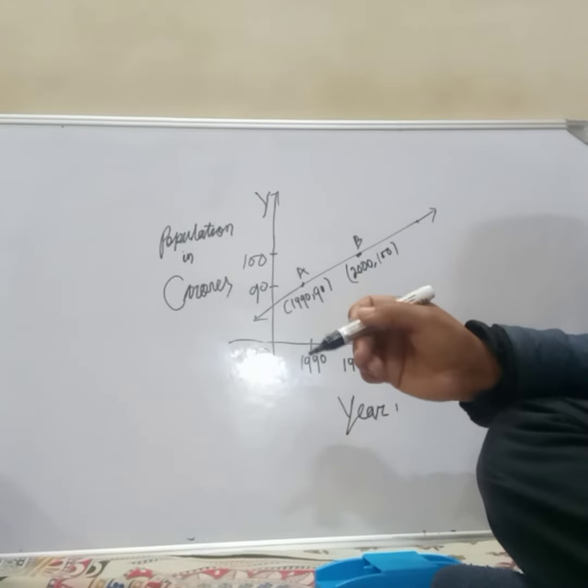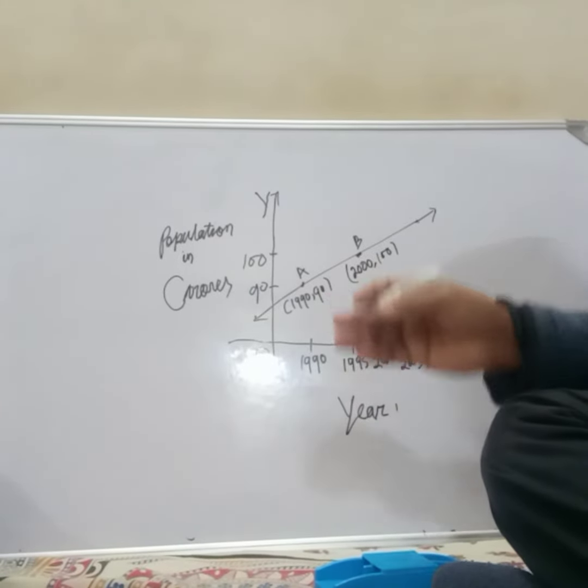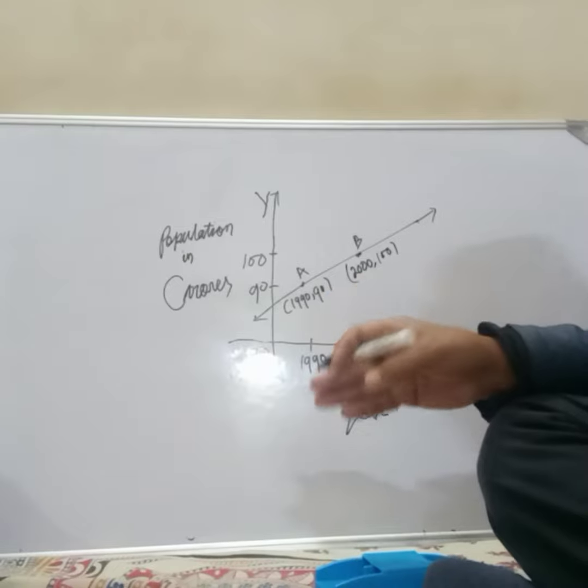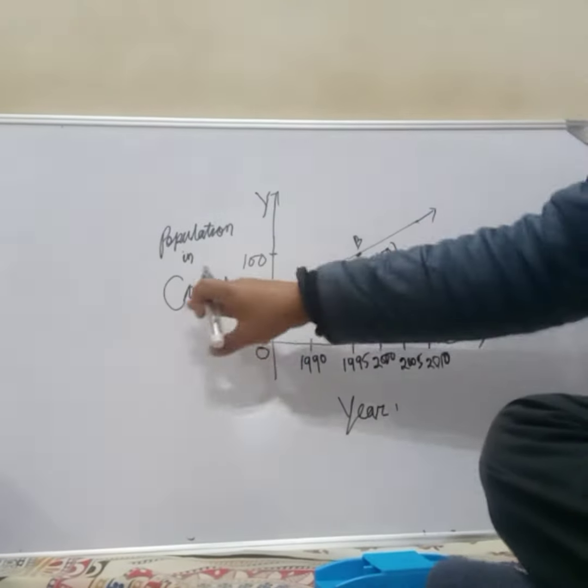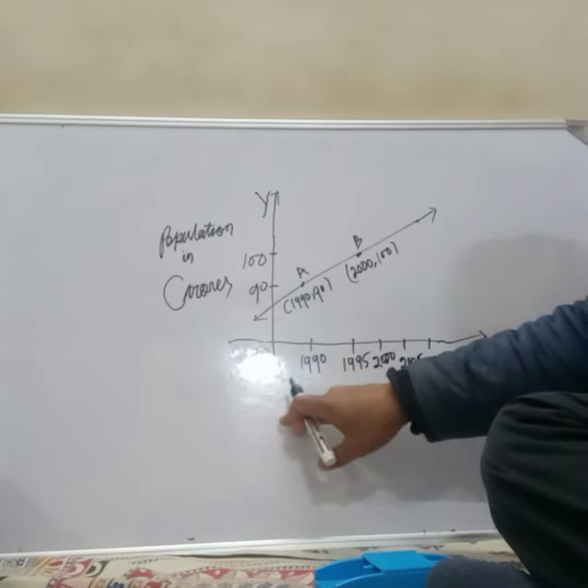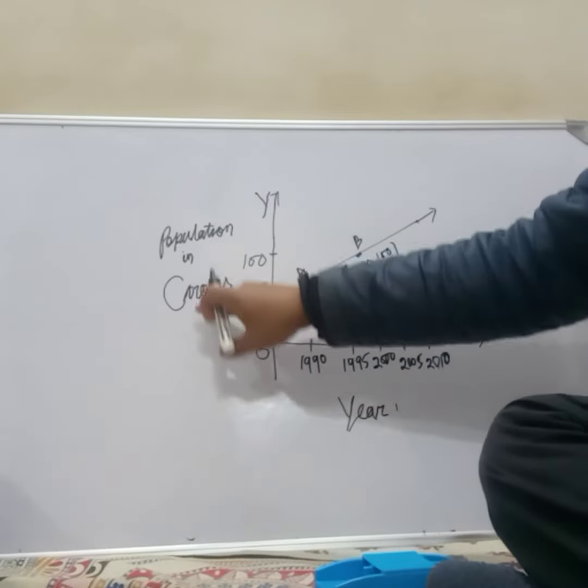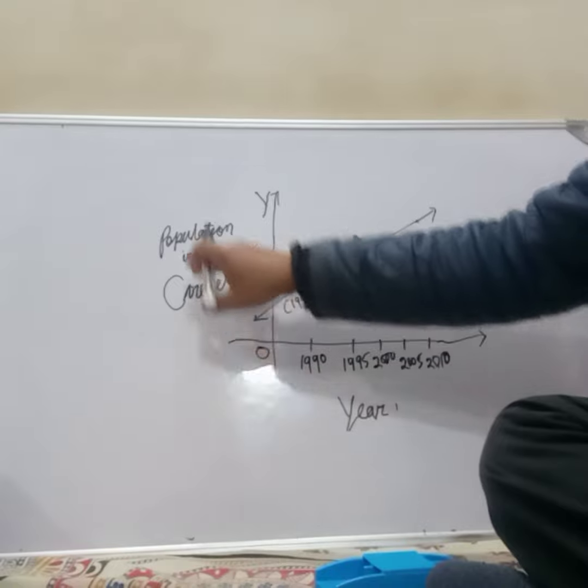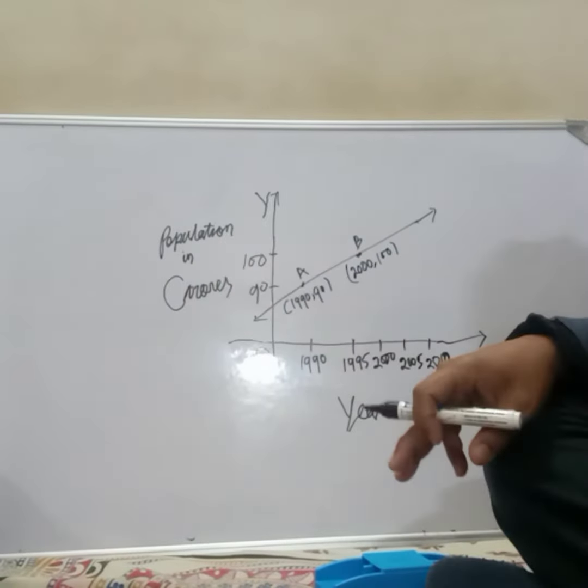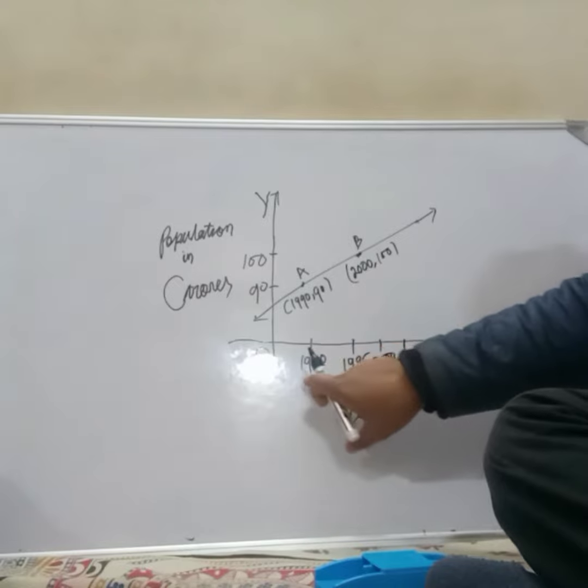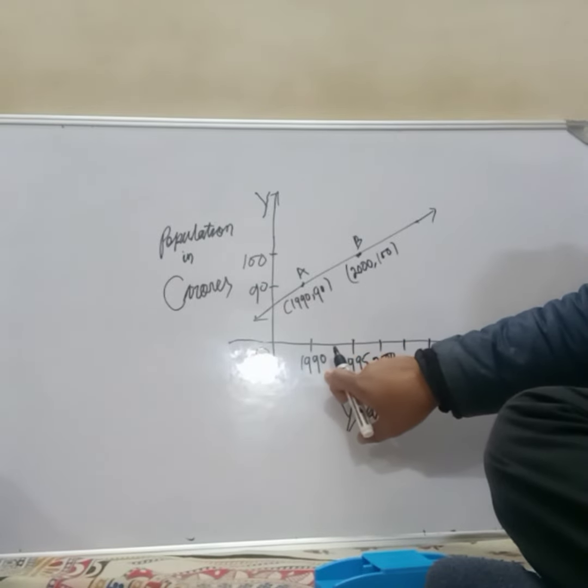Another type of question you may be asked in the exam: there will be a graph of population versus year, and in the y-axis you will be given population of human population in crores. In 1990 the population is 90 crores, and you are given point A.